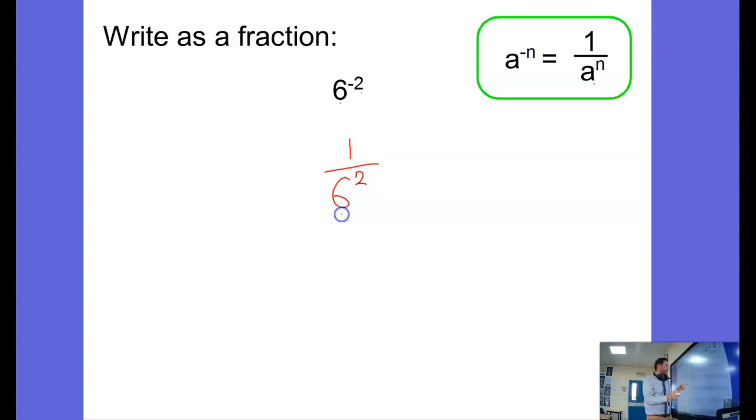And 6 squared is 36. So to write this as a fraction, 1 over 36. There it is. It's as simple as that. You write 1 over the number, and then it's the positive power on the bottom.